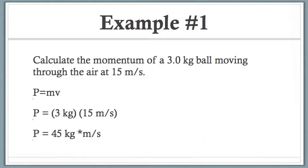So let's work through an example problem. Calculate the momentum of a 3 kilogram ball moving through the air at 15 meters per second. We've got our formula, we're going to plug in the mass which was 3 kilograms, the velocity of 15 meters per second, multiply those out in the calculator, and we get 45 kilograms times meters per second as our final answer. That's pretty straightforward and not overly challenging.